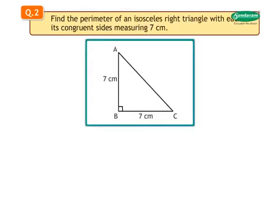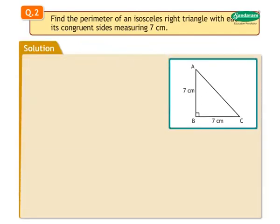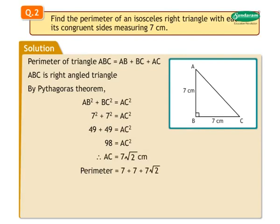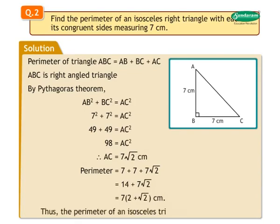Question 2: Find the perimeter of an isosceles right triangle with each of its congruent sides measuring 7 centimeters. Solution: By Pythagoras theorem, 7 square plus 7 square is equal to AC square, so AC square is equal to 98, giving AC is equal to 7 root 2 centimeters. Perimeter is equal to 7 plus 7 plus 7 root 2 is equal to 14 plus 7 root 2 is equal to 7(2 plus root 2) centimeters.